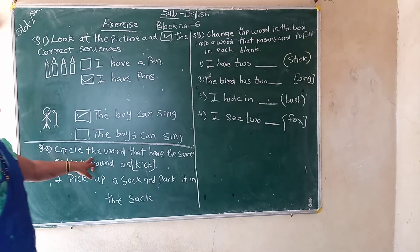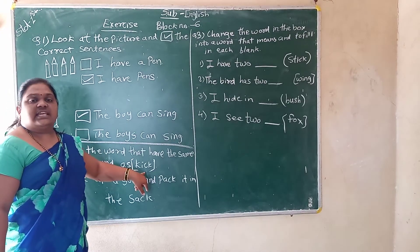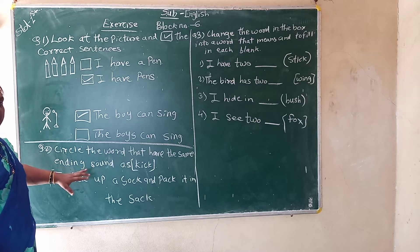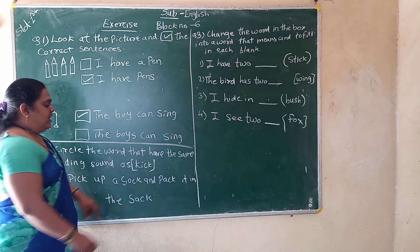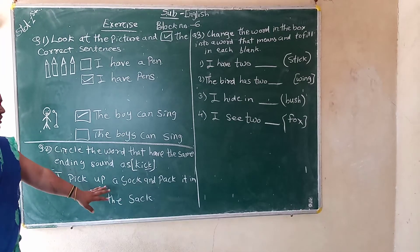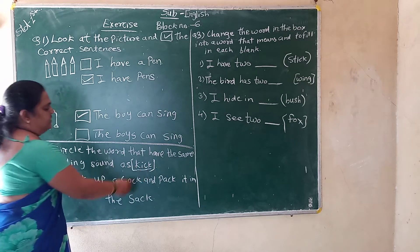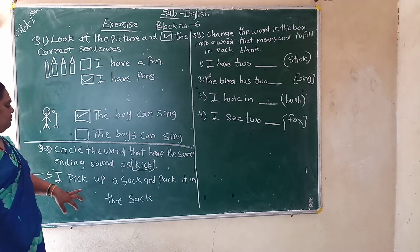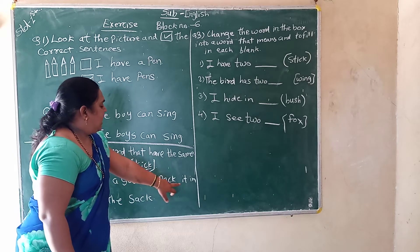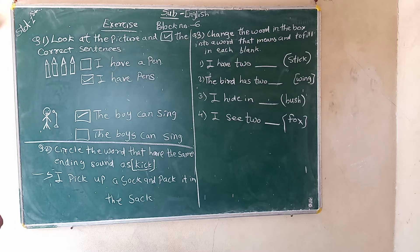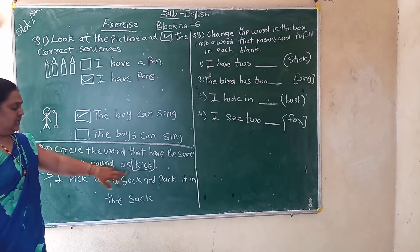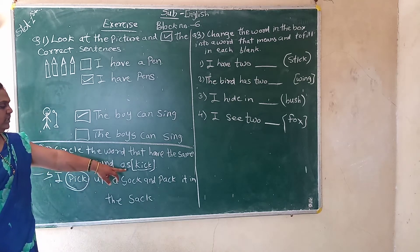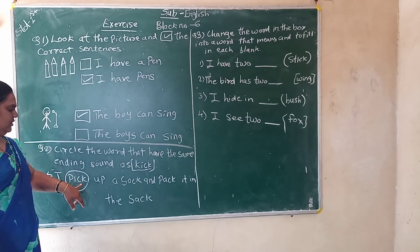Question number two: circle the word that has the same ending sound as 'kick.' I have written a sentence. You have to find the same rhyming words — words with the same ending sound. 'Kick' ends with K-I-C-K. The sentence is: 'I pick up a straw and pack it in the snack.' Which word has the same ending? 'Pick' — P-I-C-K. You have to circle that word. The word ending with P-I-C-K is the answer.